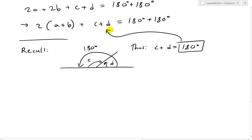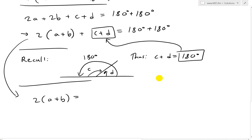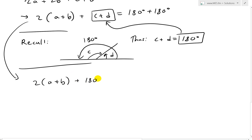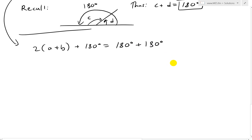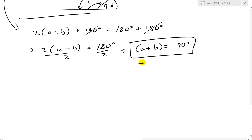So we substitute C plus D equals 180 into our equation: 2 times (A plus B) plus 180 equals 180 plus 180. Moving the 180 to the right side and canceling, we're left with 2 times (A plus B) equals 180 degrees. Dividing both sides by 2, we get A plus B equals 90 degrees — a right angle. And there is our proof.